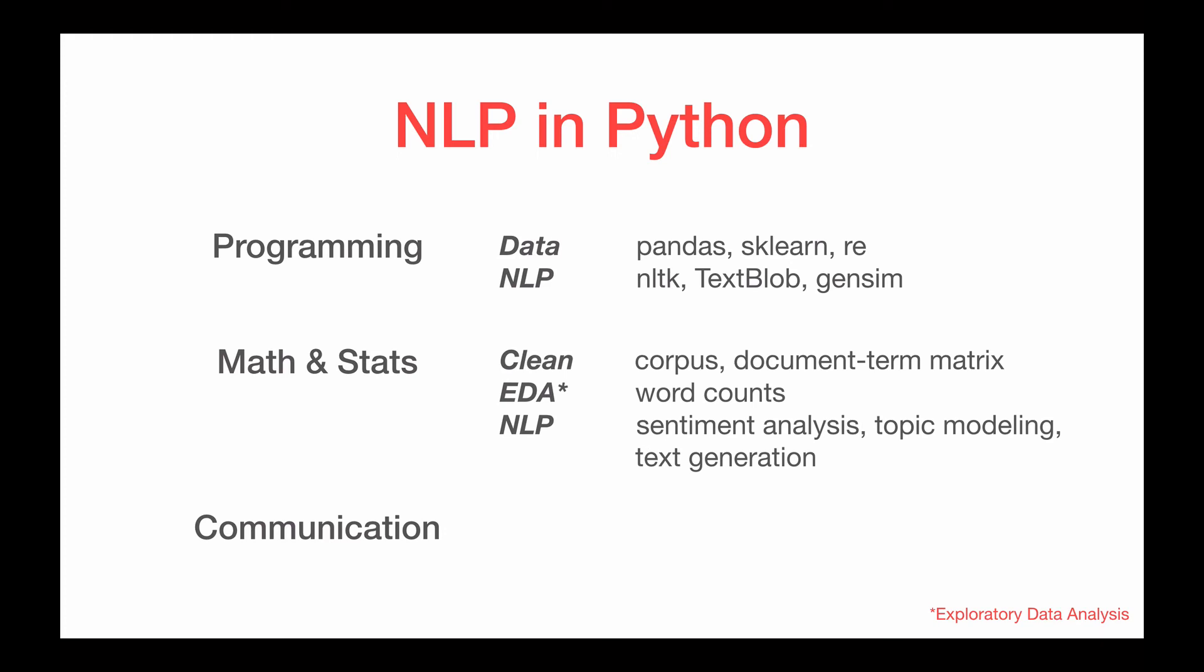And then for the math and stats piece, there are a couple different parts to that. So first, we have to figure out how to take all of our messy data and put it in a really clean format to do further NLP techniques. So we're going to put all of the text data into something called a document term matrix.